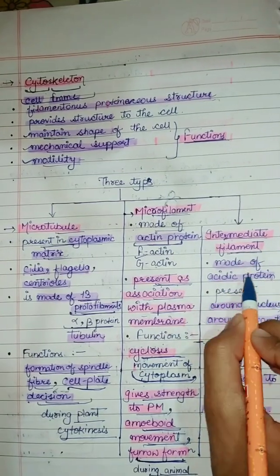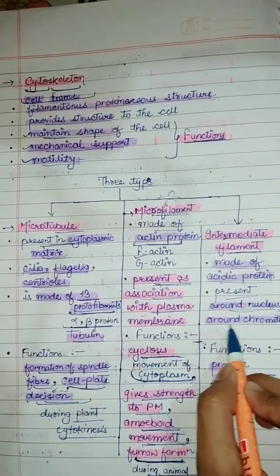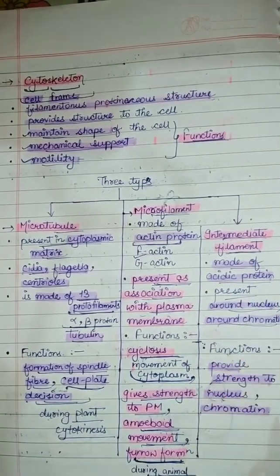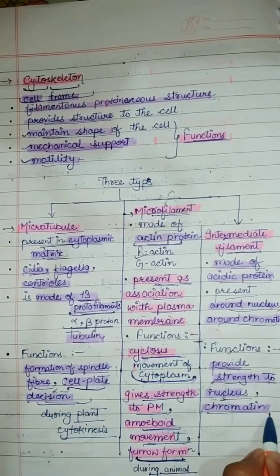The third type is intermediate filament, which is made of acidic protein. It is present around the nucleus and around the chromatin. The function is to provide strength to the nucleus and chromatin.